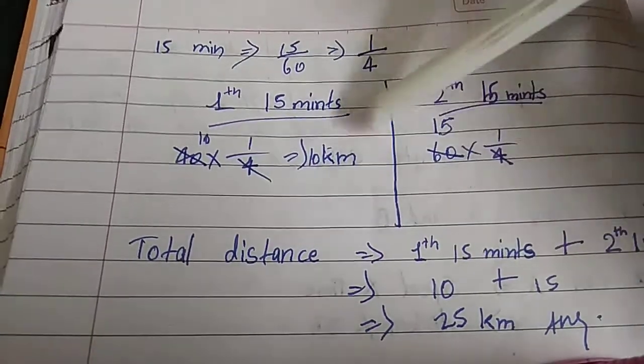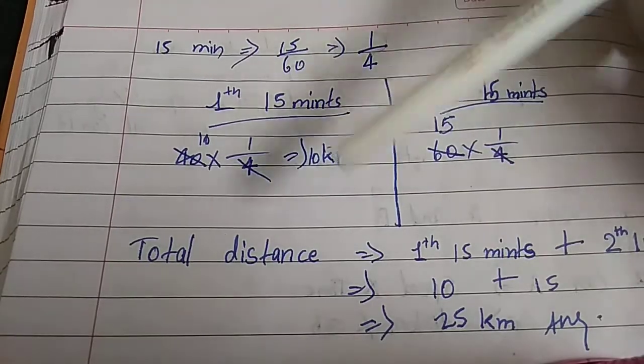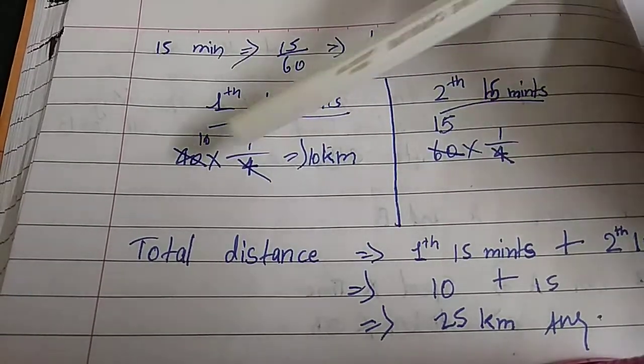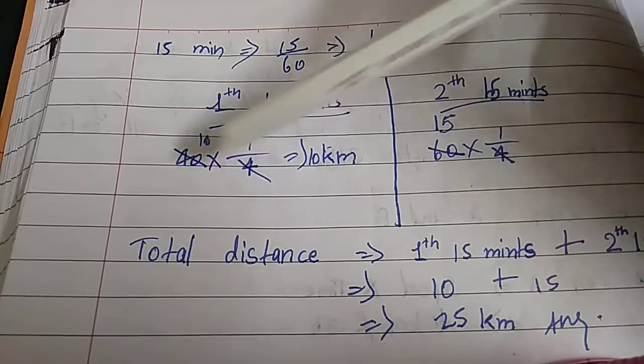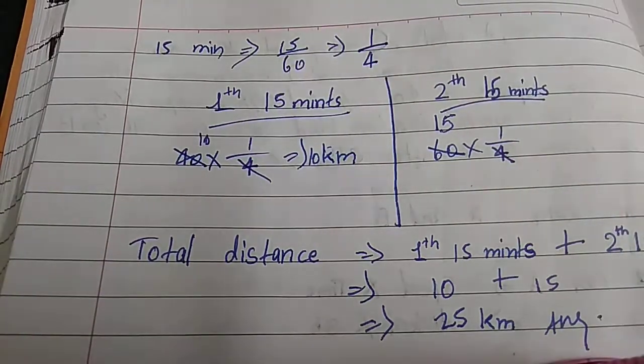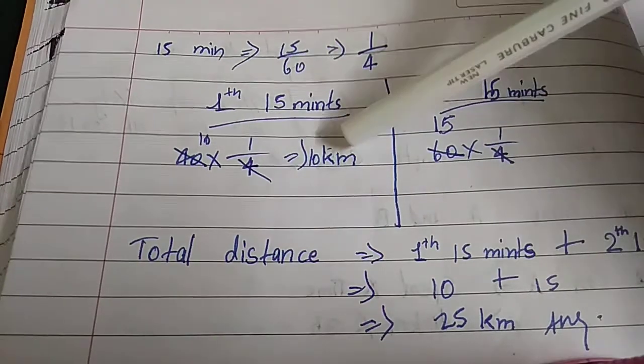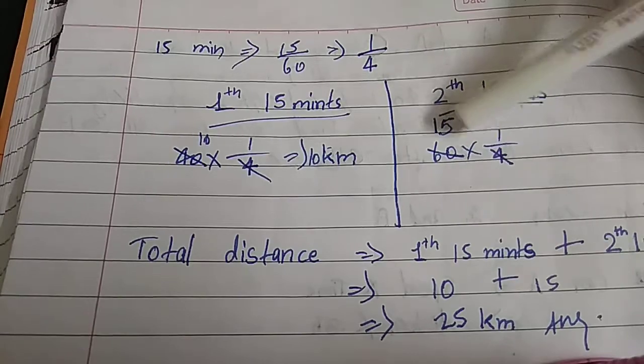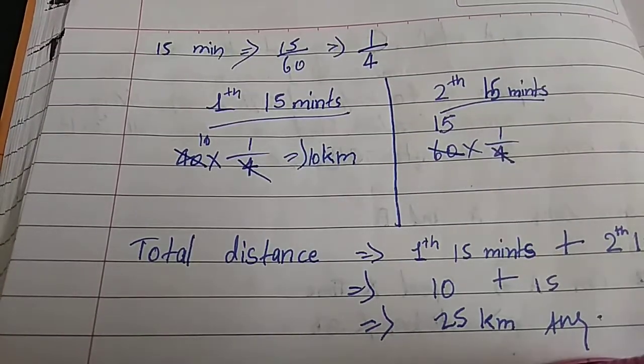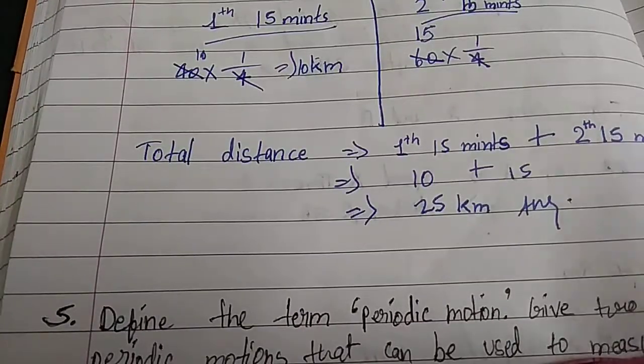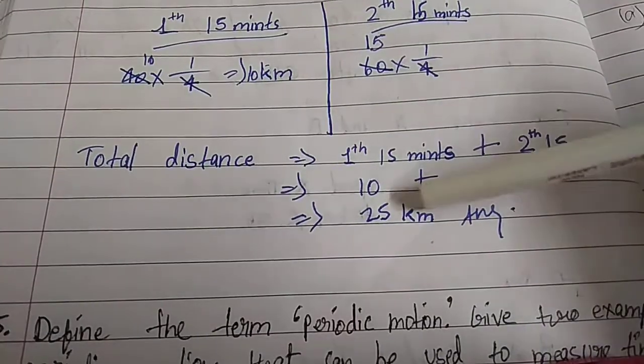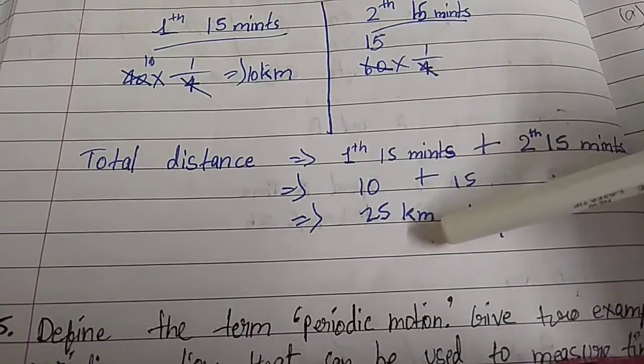We convert first 15 minutes and second 15 minutes. First 40 kilometers per hour multiplied by 1 upon 4, when we cut this we get 10 kilometers. Then 60 multiplied by 1 upon 4 equals 15. Total distance equals first 15 minutes plus second 15 minutes, so 10 plus 15 equals 25 kilometers.